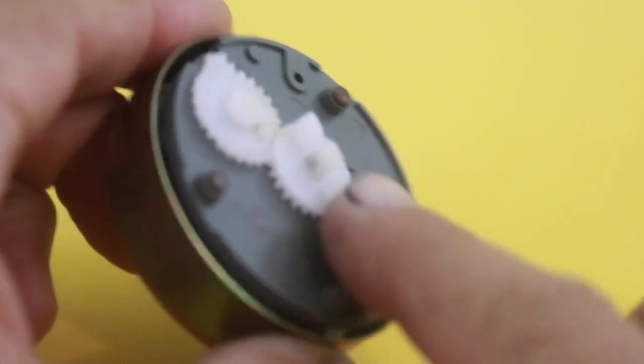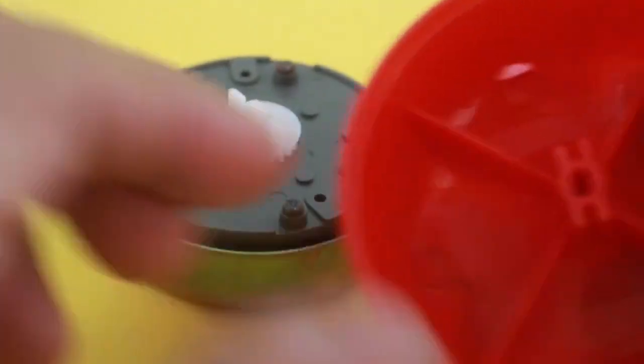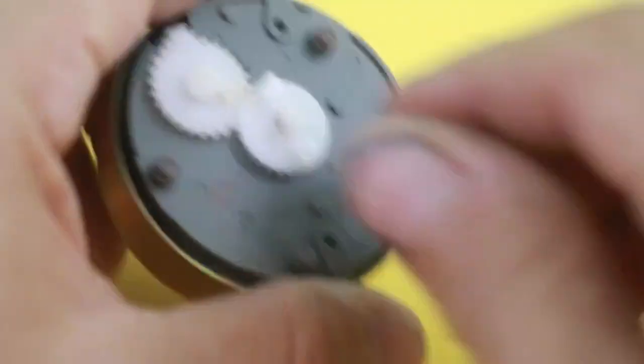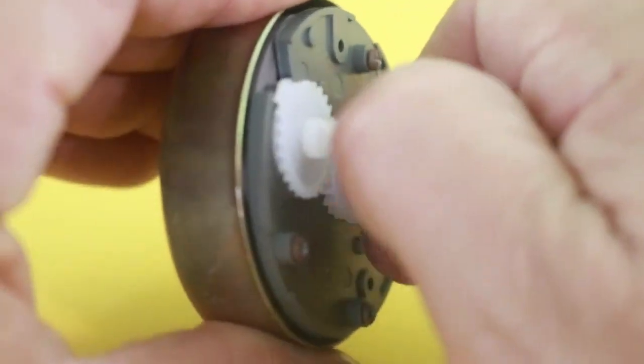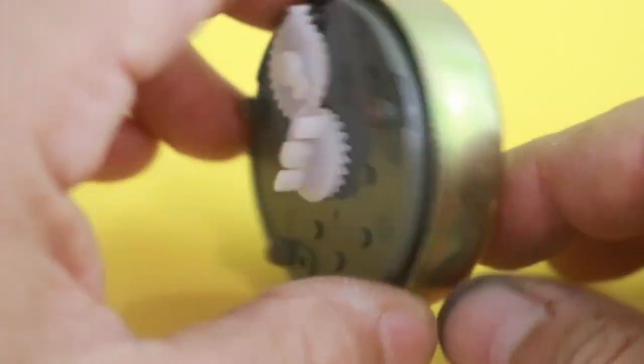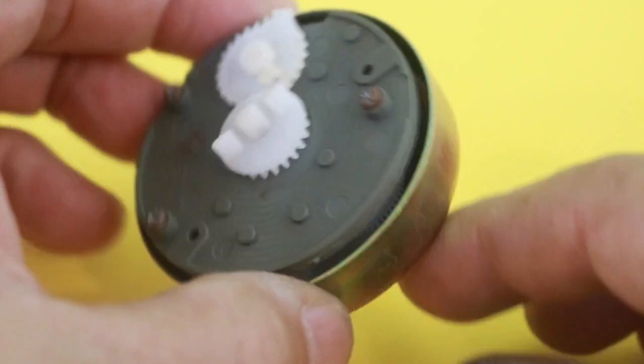With this gear you can wind up the mechanism. It fits here and then you can rotate and wind the mechanism. But now let's take apart these screws in order to see what's inside.